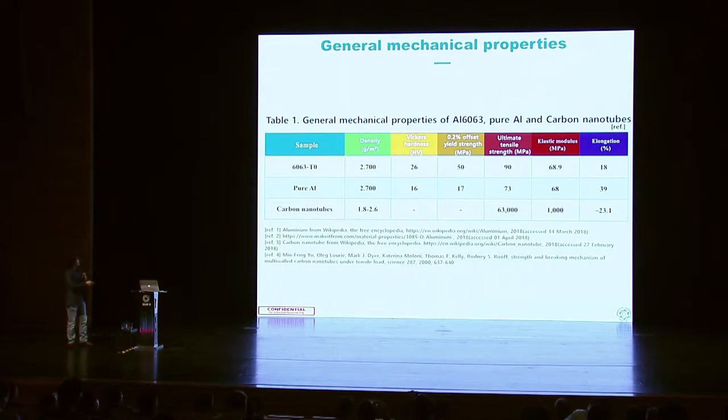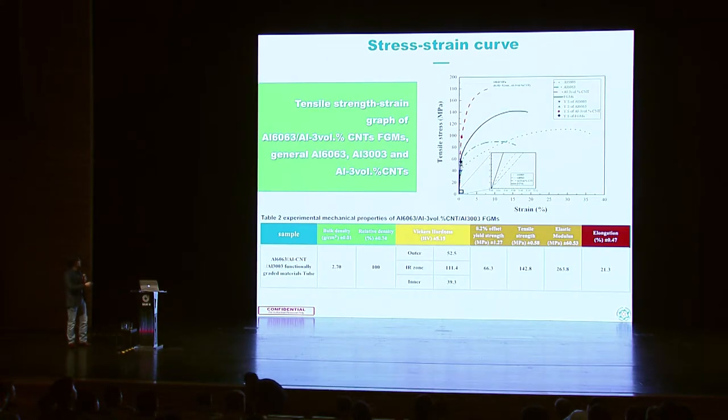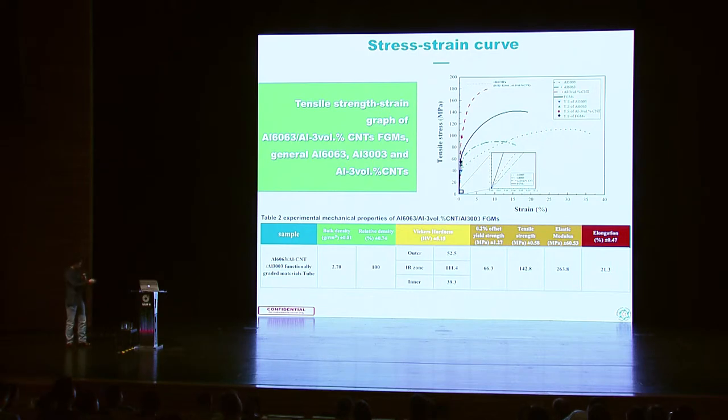Here are some properties of the aluminum 6000 series, pure aluminum, and carbon nanotubes combined. Compared to these, our FGM cylinder tube incorporating aluminum 6000, 3000, and aluminum CNT gave a very remarkable value, especially for elastic modulus. As you can see here, 263 GPa. In general, aluminum or aluminum alloy shows around 70 GPa, but in our case, 263 GPa.